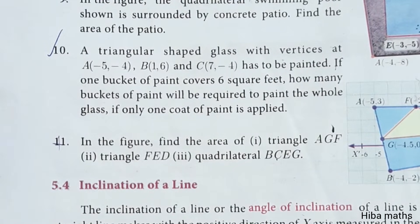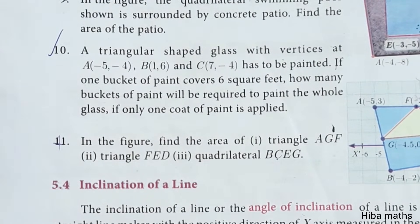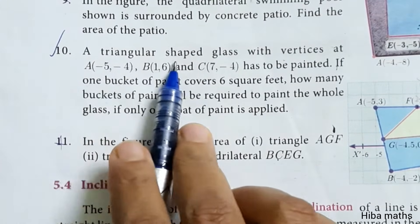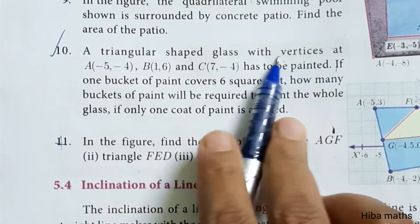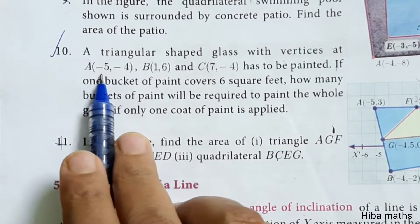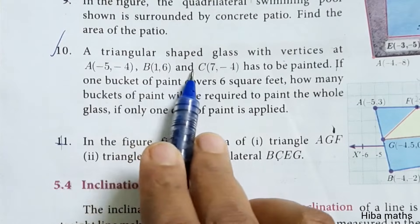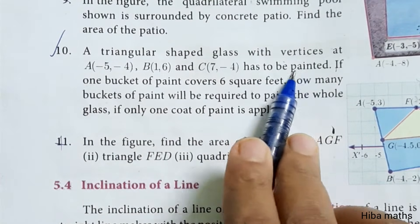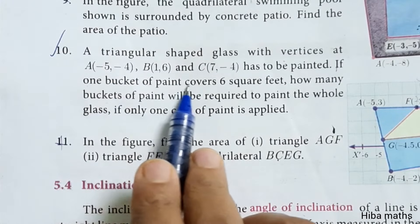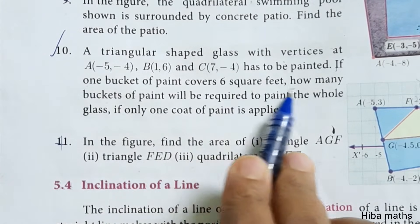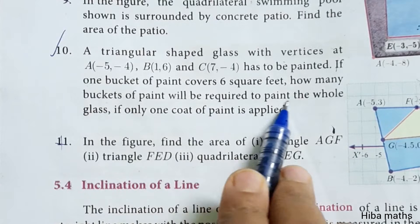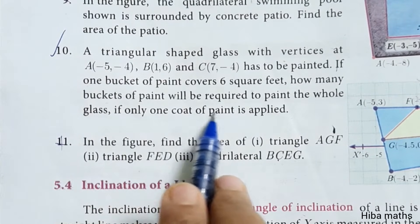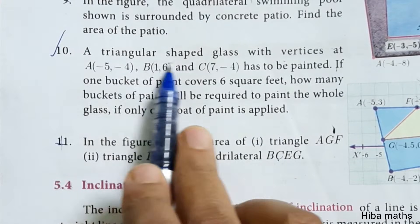Hello students, welcome to Hibamax 10th Standard Max Chapter 5. This is Exercise 5.1, question 10. A triangular shaped glass with vertices at A(-5, -4), B(-6), and C(7, -4) has to be painted. If one bucket of paint covers 6 square feet, how many buckets of paint will be required to paint the whole glass if only one coat of paint is applied?